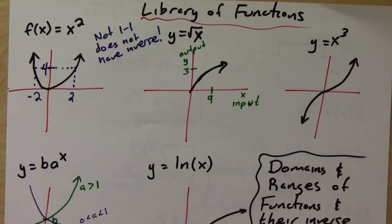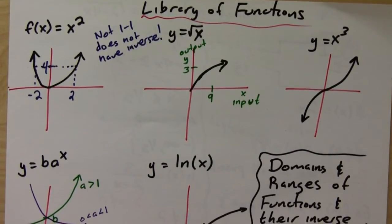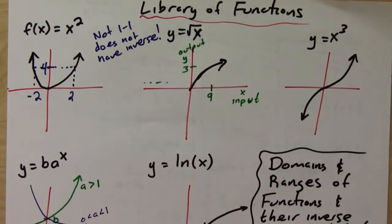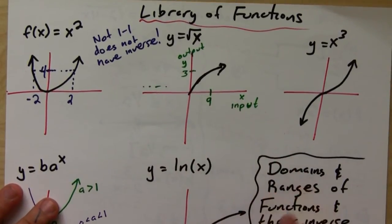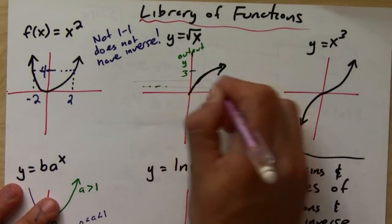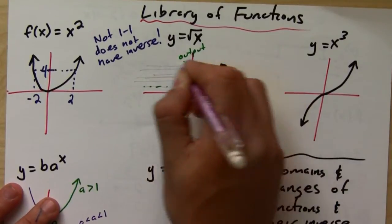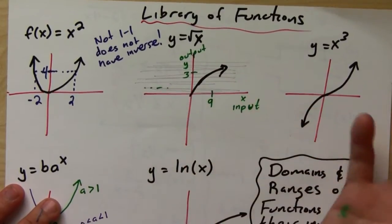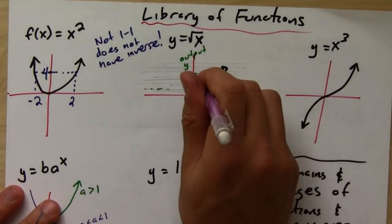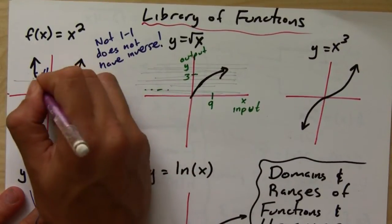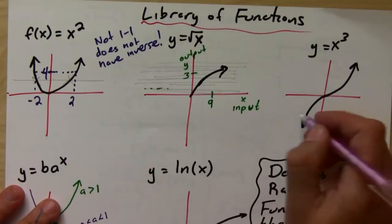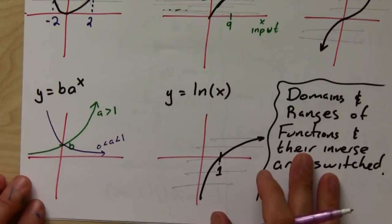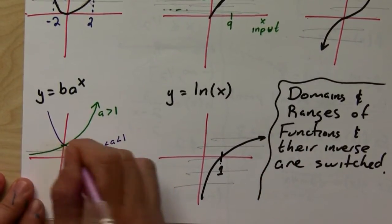For example, square root of X — if I pass horizontal lines through it, it's only going to hit once. A horizontal line is allowed to hit either zero times or one time. So square root of X is one-to-one. X squared, if you pass a horizontal line, it hits twice, so it's not one-to-one. X cubed is one-to-one. Natural log of X is one-to-one. And the exponential functions are as well.